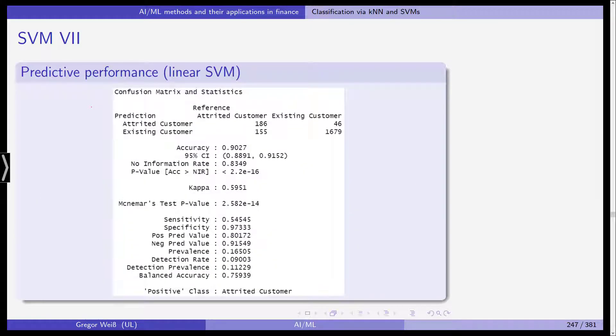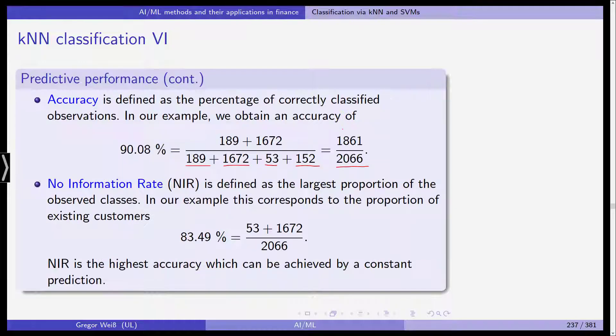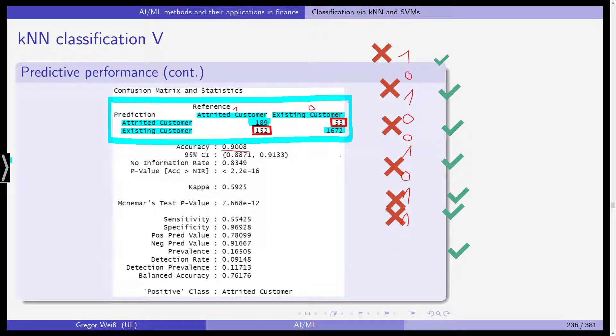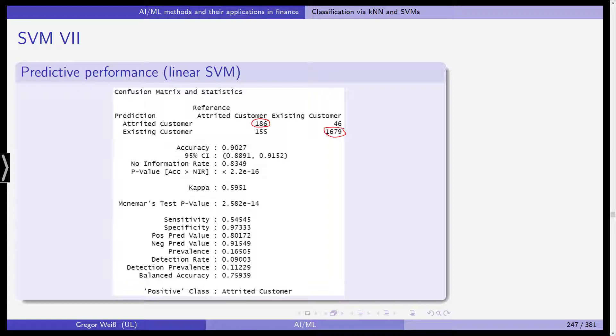This is the linear support vector machine. Again, you can see from this very simple matrix 186, 167, 9 looks almost the same as for the k nearest neighbor. Let's compare this. Let's go back some slides and you see 189, 167, 2. Actually, it's almost the same. Almost the same accuracy 90.27% and the additional metrics here in the confusion matrix.